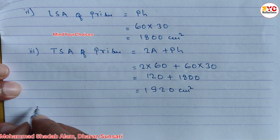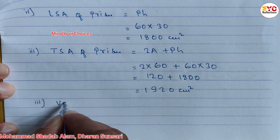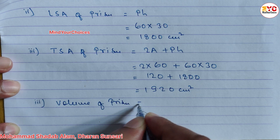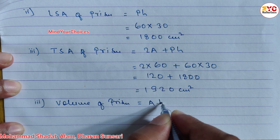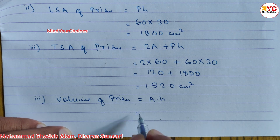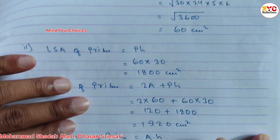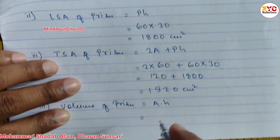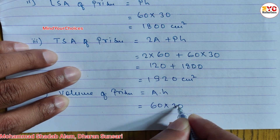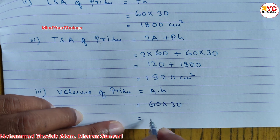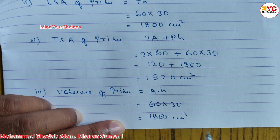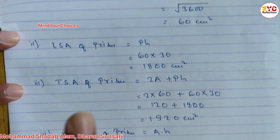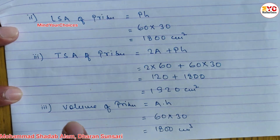Now we have to find out the volume in number 4. Volume of prism formula is A into H — area of base into height. Area of cross-section is 60 and height of prism is 30. So 60 × 30 = 1800 cm cube. Hope you understand how to find area of cross-section, lateral surface area, total surface area, and volume.